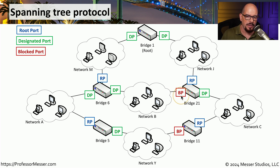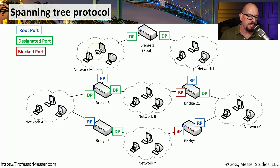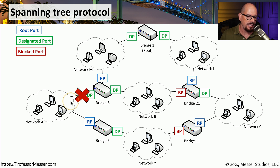You can see on this network that Bridge21 has a blocked port and Bridge11 has a blocked port, and those have been blocked so that there is not a loop on the network. If we were communicating from Bridge11, you can see there is a single root port, and you can follow that all the way back with those root ports to the final root bridge. The designated ports are also available to send and receive traffic. In this scenario, let's say we are on network A and communicating with a device on network M. We can communicate through Bridge6, which has a designated port and a root port that allows us access to network M. But what if there is a problem and we lose connectivity between network A and Bridge6? Now we need another way to communicate to network M, but there is a blocked port on Bridge11, so we would not be able to communicate through that connection.